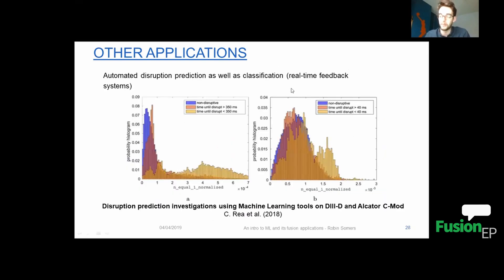This is also very popular and the main use of machine learning is disruption prediction, basically very close to what we are doing. So real-time prediction of whether a disruption will happen and also real-time feedback.